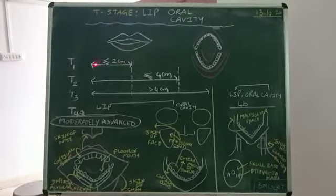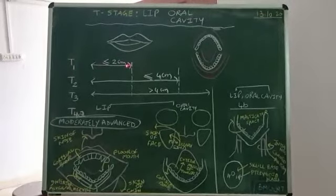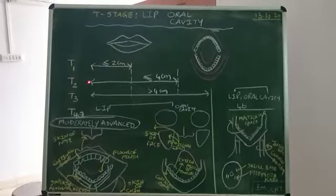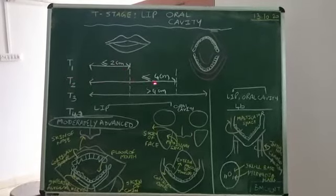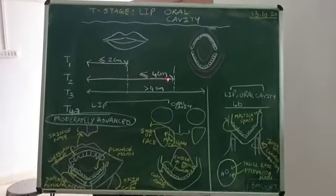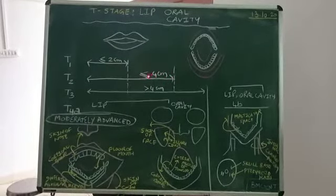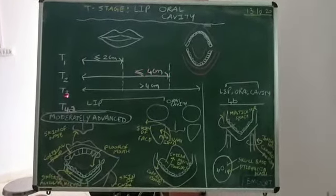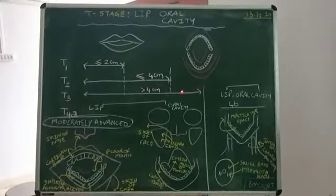T1 less than 2 cm. We can take this arbitrarily as 2 cm. T2 is beyond 2 cm, that is less than 4 cm. If you take this arbitrarily as 4 cm, it is not passing 4 cm, it is less than or equal to 4 cm. T3 is crossing 4 cm, beyond 4 cm.